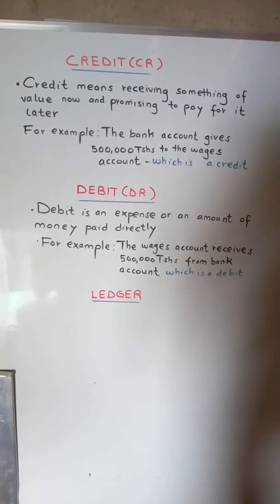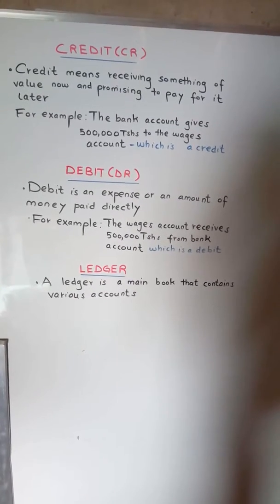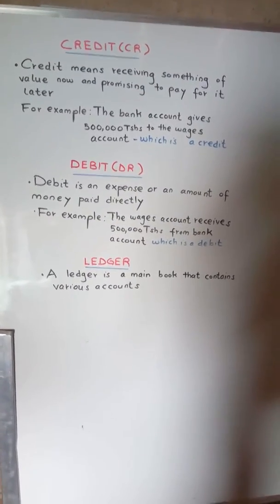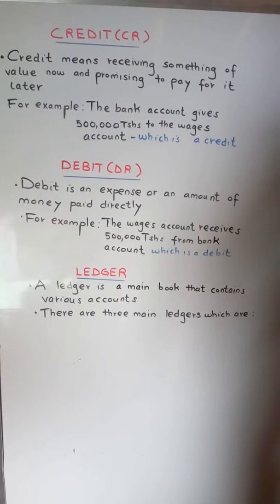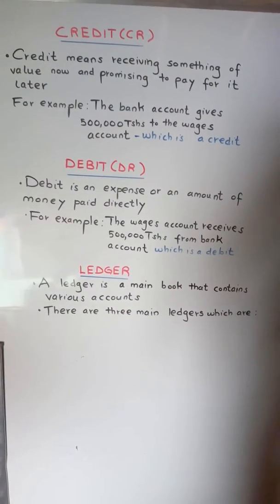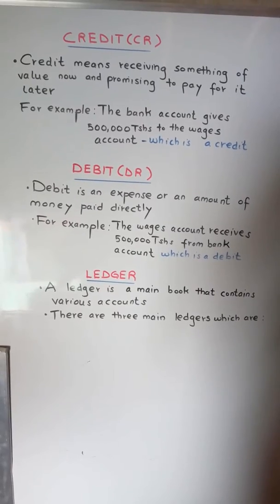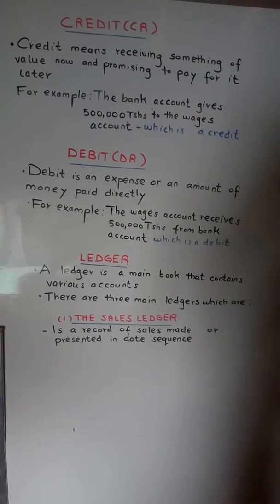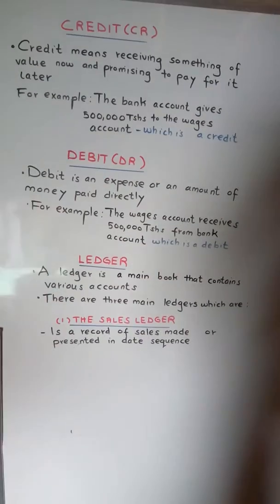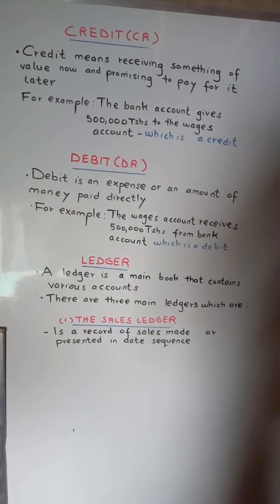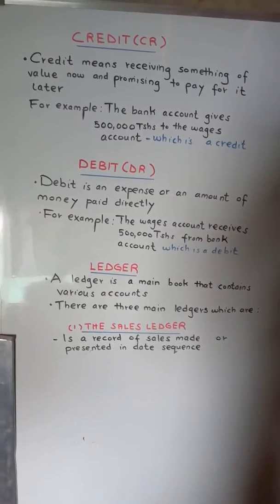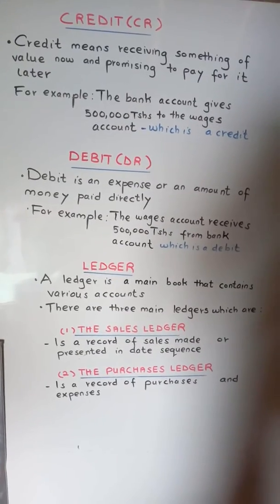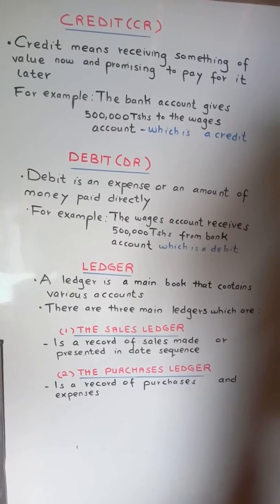A ledger is a main book that contains various accounts. There are three main registers: the sales ledger, which is a record of sales made or presented in sequence, and the purchases ledger, which is a record of purchases and expenses.